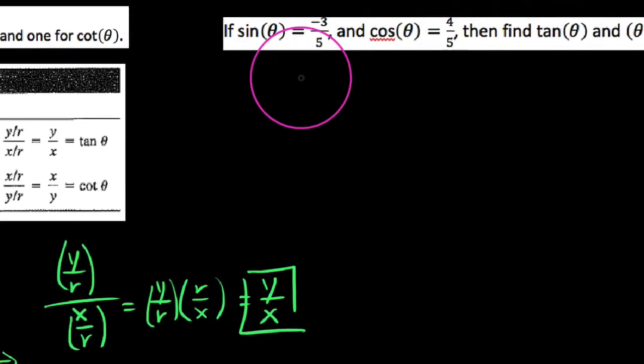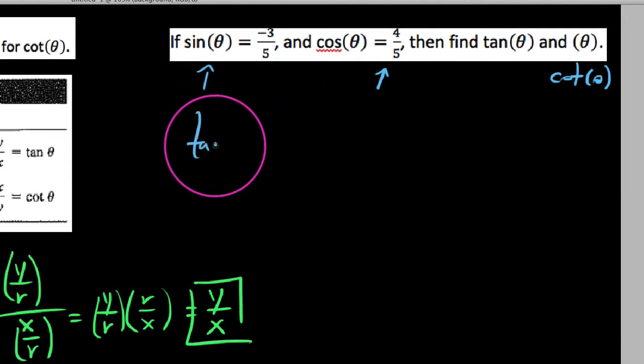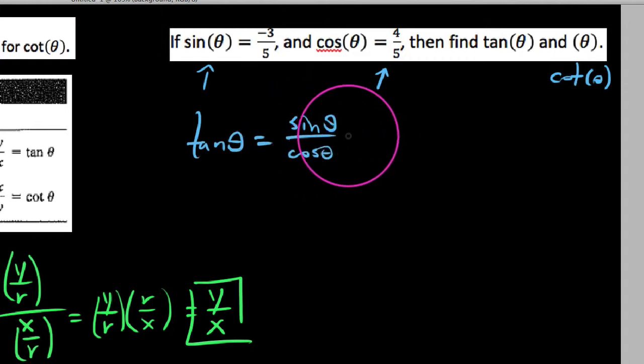It basically follows that if we knew the sine of an angle, like we know the sine of an angle here, sine of theta is negative three-fifths, and the cosine of the same angle is four-fifths, then what I want to do is find tangent of theta. So let's go ahead and start by finding the tangent of theta.